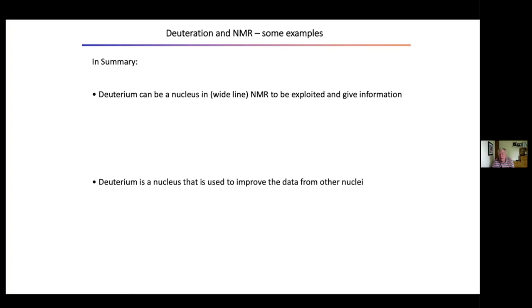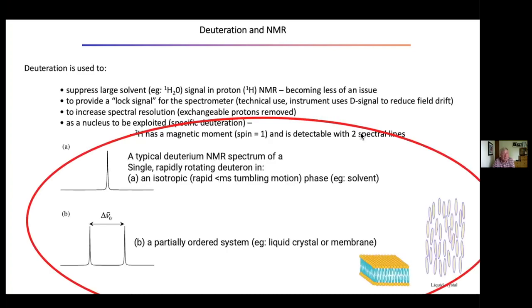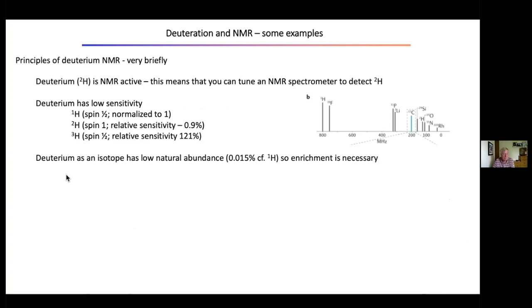The first example is lipids in bilayer membranes. Deuterium has spin-1, a quadrupolar moment, and two spectral lines sensitive to orientation. We often want to know the orientation and dynamics of particular groups within the membrane. It is low in natural abundance so enrichment is necessary. The further you go from proton frequency toward zero field, the lower the sensitivity — so deuterium is both low in natural abundance and low in sensitivity. But it is worth using.